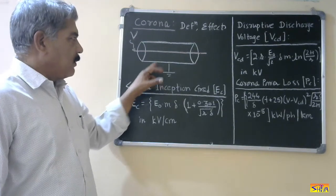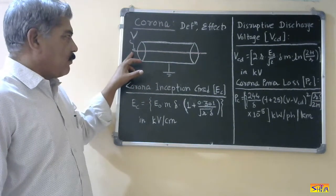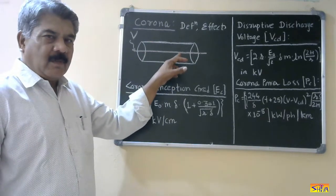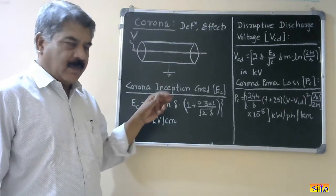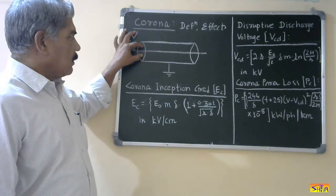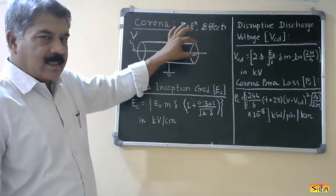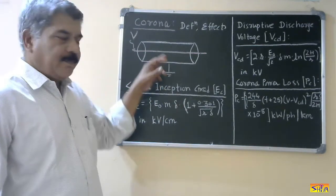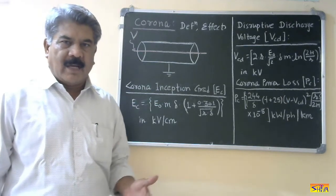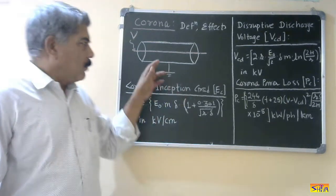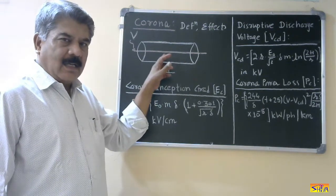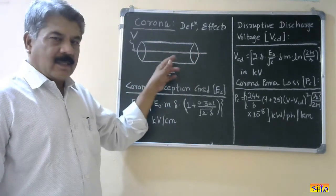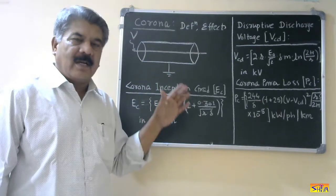This cage is grounded, and to this conductor we are applying voltage at one end. When we increase the voltage, the electric field will increase and it is a non-uniform electric field. Therefore, the air surrounding this conductor starts getting ionized, and around this conductor we get charged particles of the air — positive ions as well as electrons. These charged particles are in motion, generating some noise, and we can observe a glow surrounding this conductor if it is dark. That is called corona.